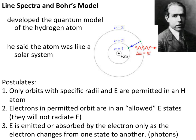The explanation of the line spectra, which is an observable phenomenon, is directly connected with Bohr's model. Basically, what Bohr created or postulated was a quantum model for the hydrogen atom. He said the atom was basically shaped like a solar system, so it kind of looks like what you see here.